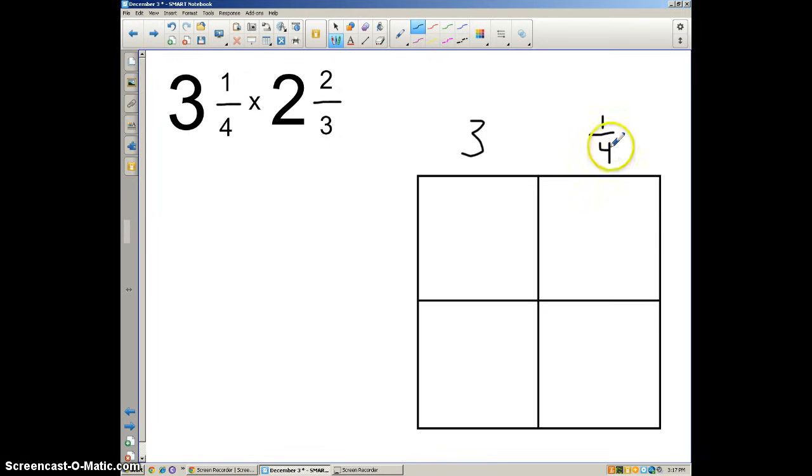So you're going to put the whole number on one of the sections and then the fraction in the other section. So we have 3 here, 1/4 here. Then we're going to take 2 and 2/3. And again, we're going to look at those in its own parts. So the whole number here and then the fraction here. So down here in this section is going to be the 2/3.